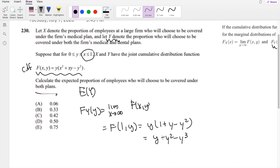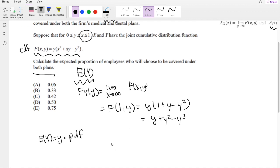But the thing is, in order to find expectation, we need marginal distribution, not the CDF. We need the PDF, right? Because any expectation is just equal to Y times the probability. So the probability of Y will be equal to just the derivative of this, which is equal to 1 + 2Y - 3Y².